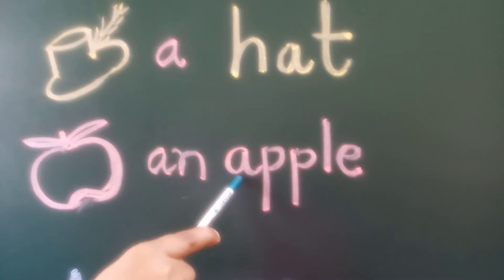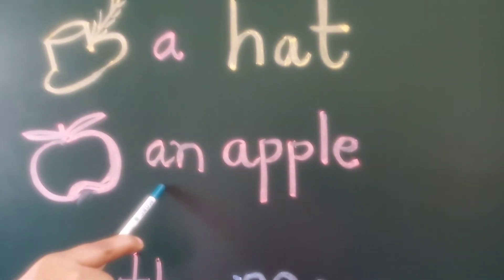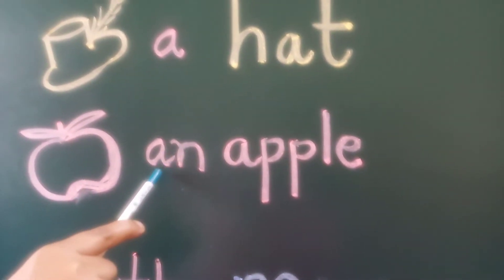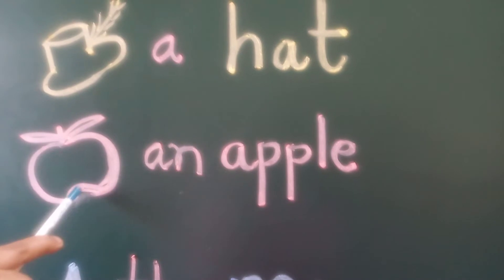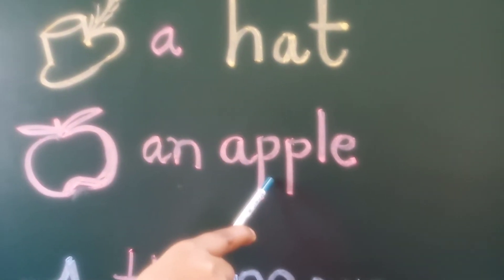A is a vowel. In front of a vowel we use 'an'. So we write: an apple.